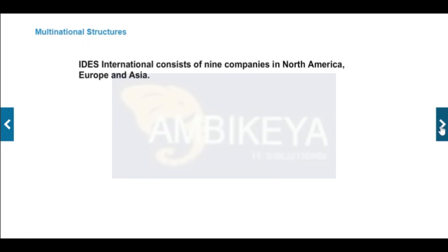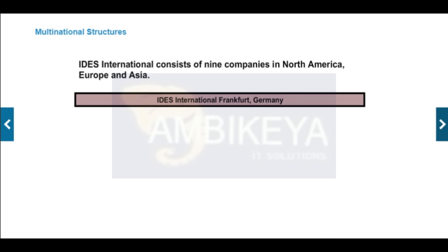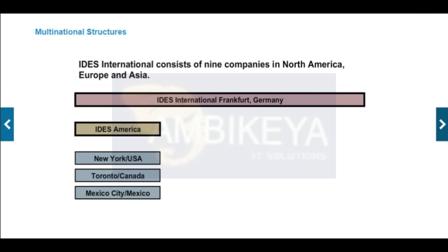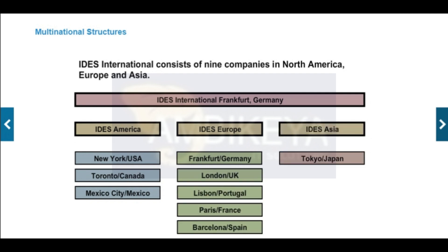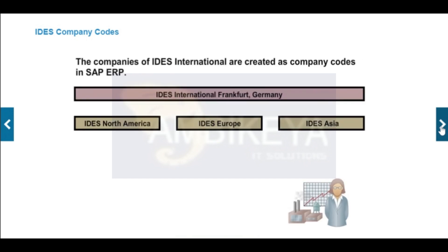The IDES Enterprise serves as a sample group. IDES operates worldwide and has subsidiaries in North America, Europe, and Asia. Each affiliate company code is a legal entity required by law to provide financial records according to country-specific regulations. The affiliates of IDES are set up as company codes in the SAP ERP system and are uniquely identified by four-character codes.